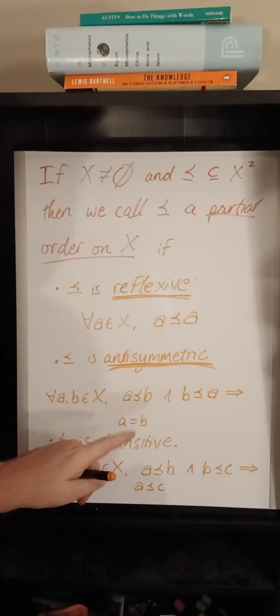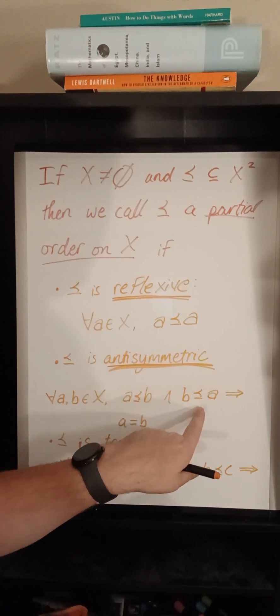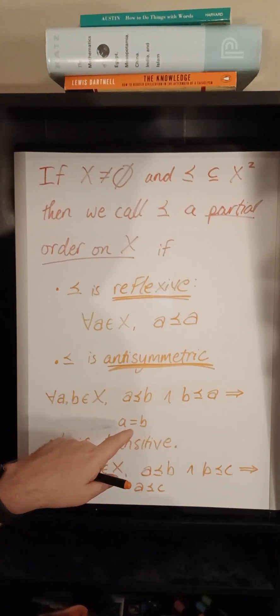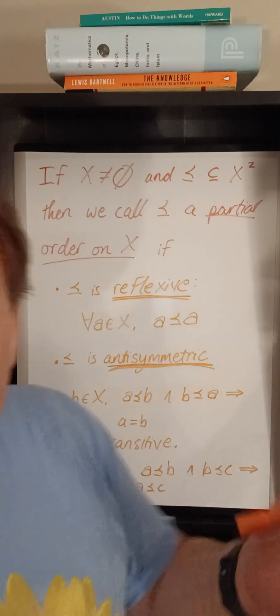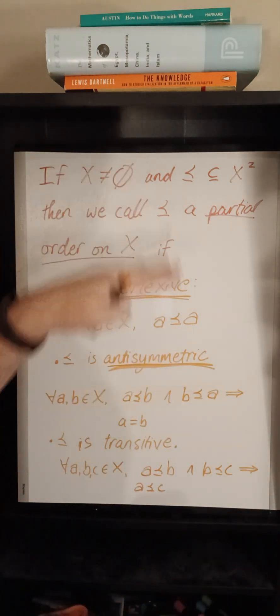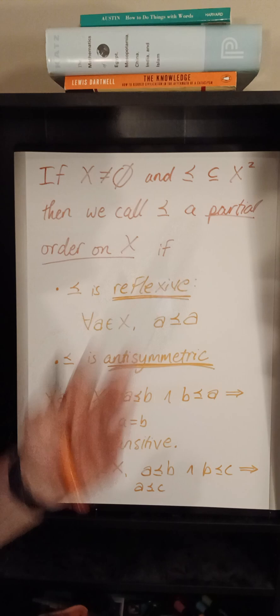It must be anti-symmetric, which means that if the relation holds in one direction and also holds in the other, then the two elements must actually be equal. Notice that these are properties that are true for the regular less than or equal to on, say, the integers.